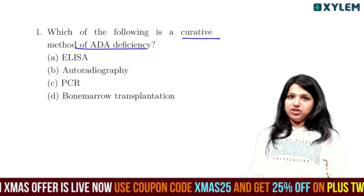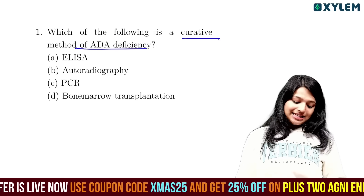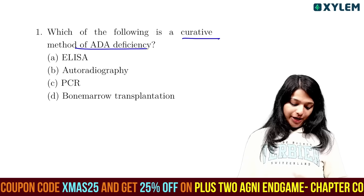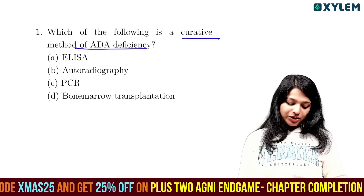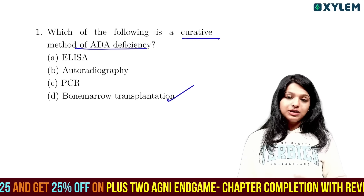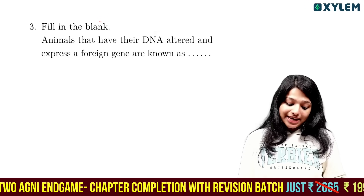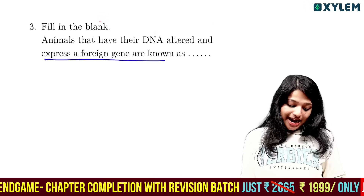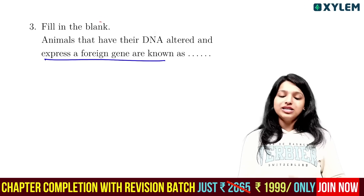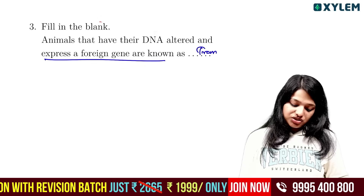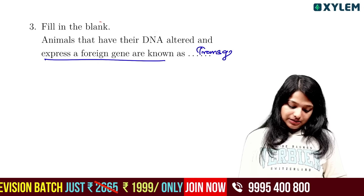Which of the following is a curative method of ADA deficiency? The answer is bone marrow transplantation. ELISA, autoradiography, and PCR are not curative methods. Animals that have their DNA altered to express a foreign gene are called transgenic animals.